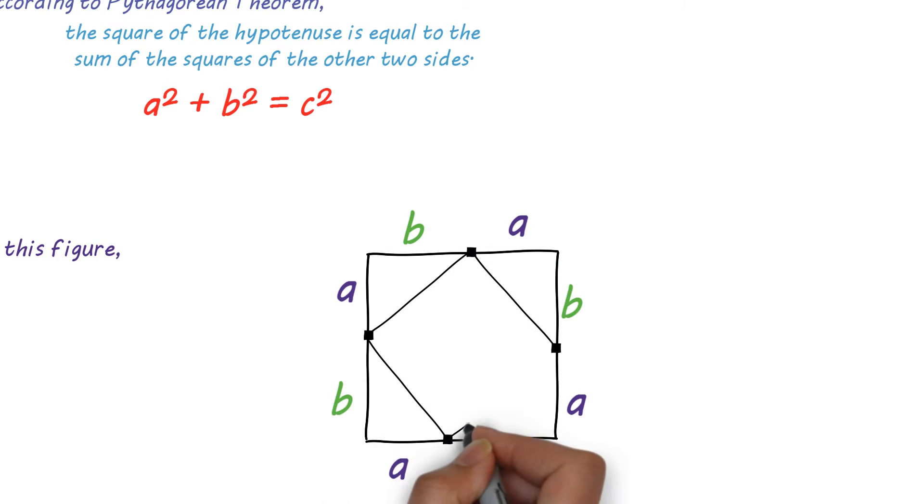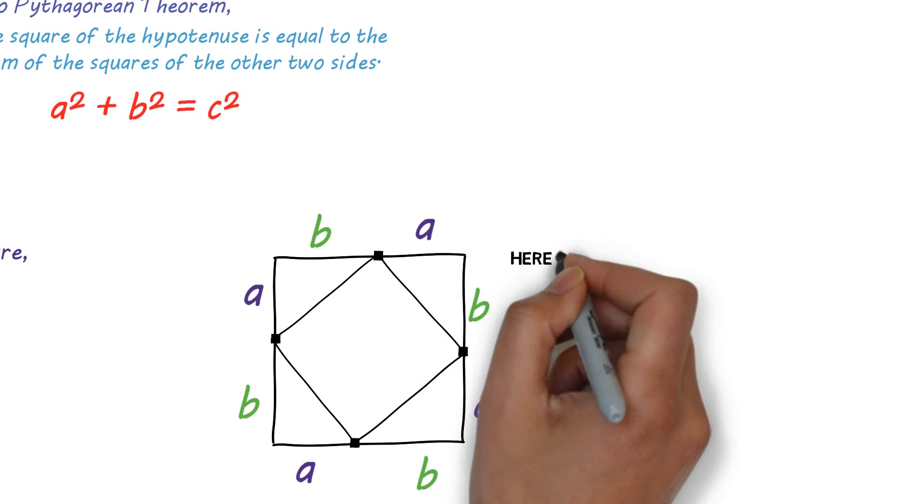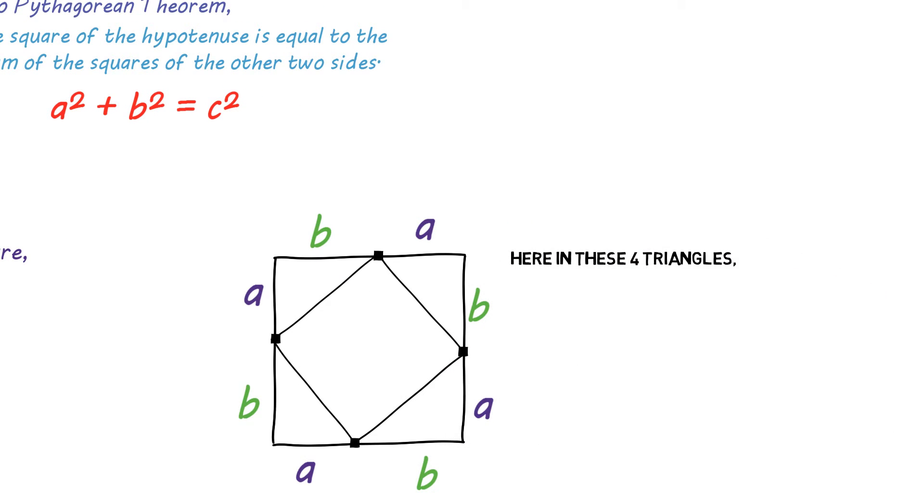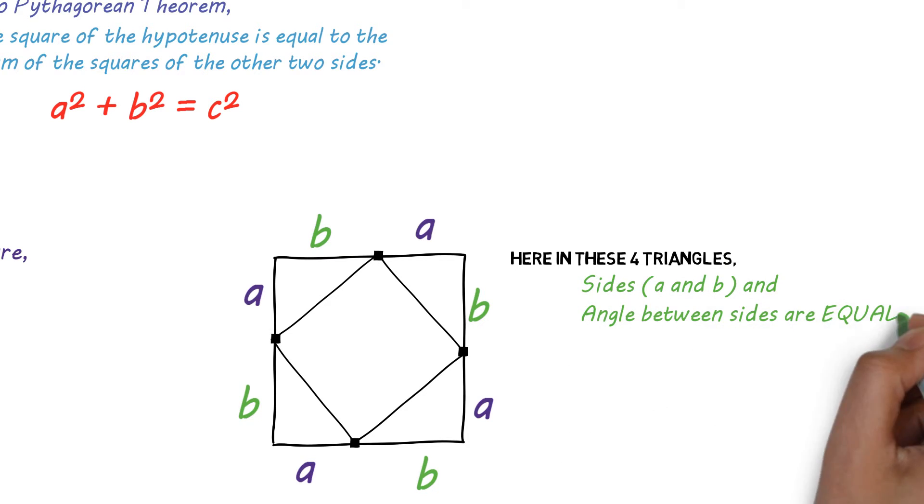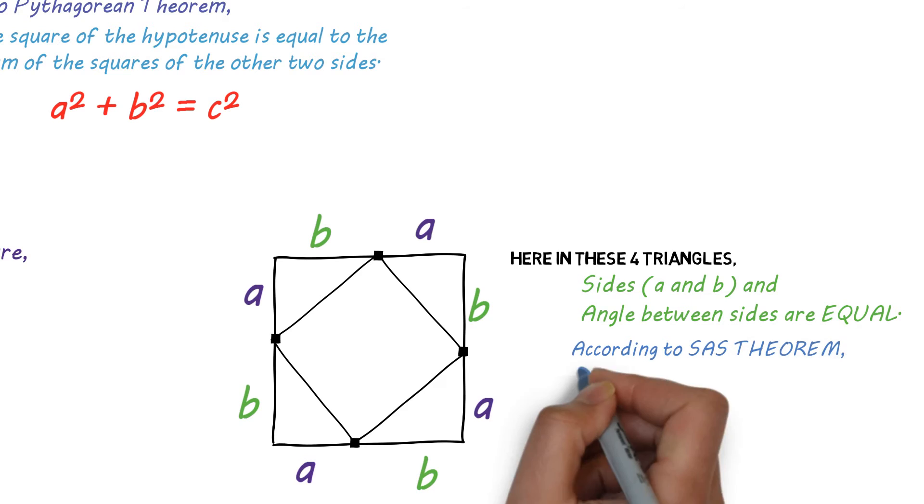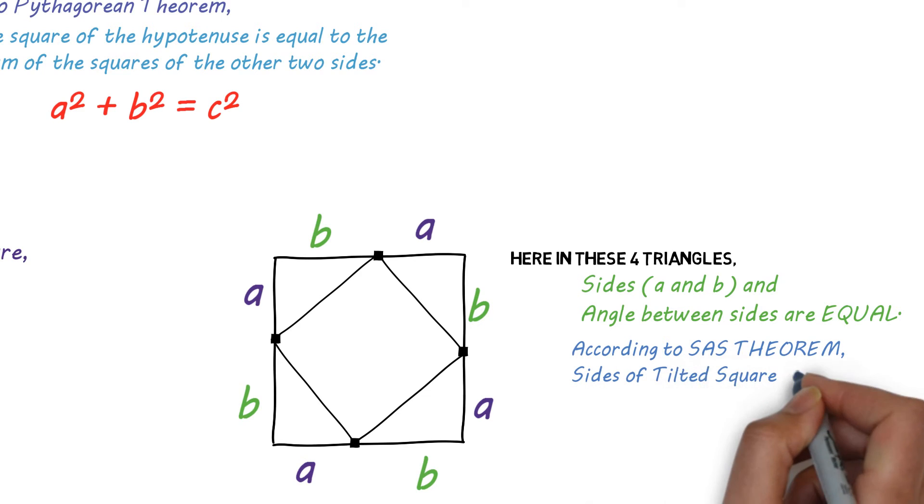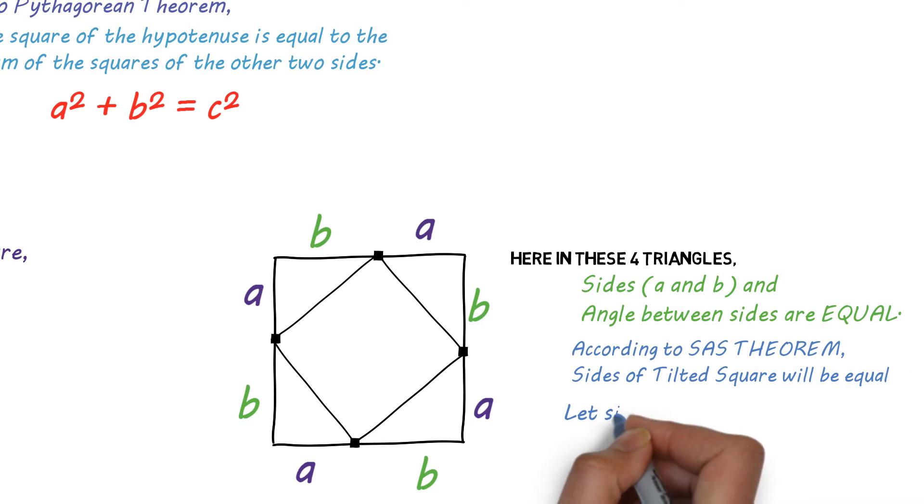You will observe that there is a new square which is tilted. You will also observe that in these four triangles, sides A and B and angle between sides are equal. According to SAS Theorem, sides of tilted square will be equal. Let sides of tilted square be C.